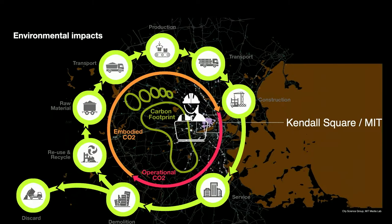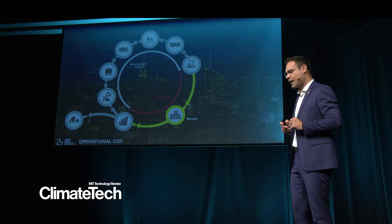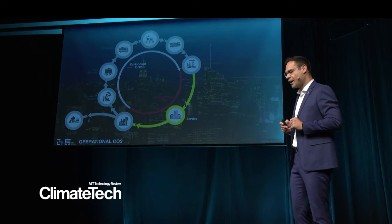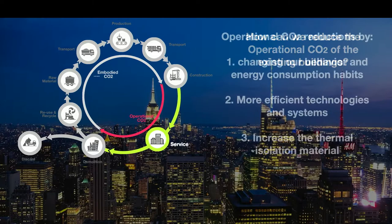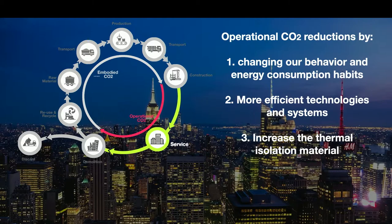Each of us has a different carbon footprint depending on where we live, how we move, or even what we eat. Let me focus on the existing buildings in Kendall Square and operational CO2. How can we reduce operational CO2 in existing buildings? There are three ways: one is changing the behavior of people, the second is building retrofitting with more efficient technologies, and the third is deep building retrofitting — increasing the thermal isolation of our buildings.